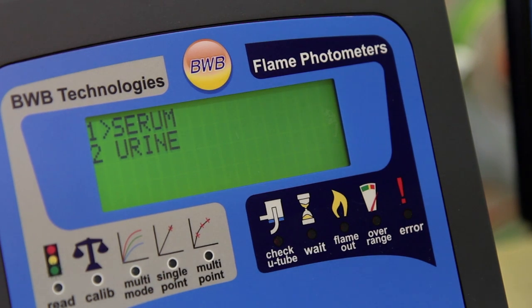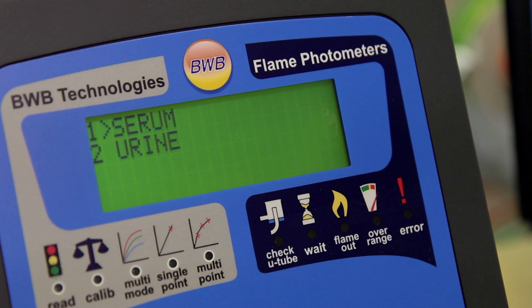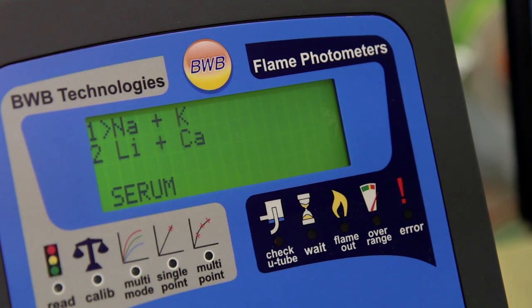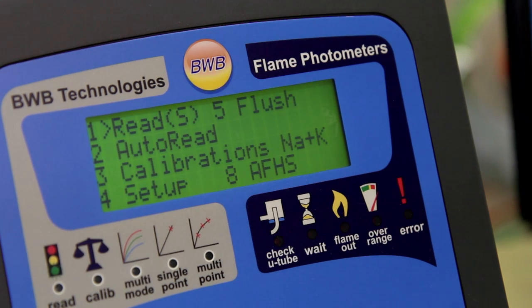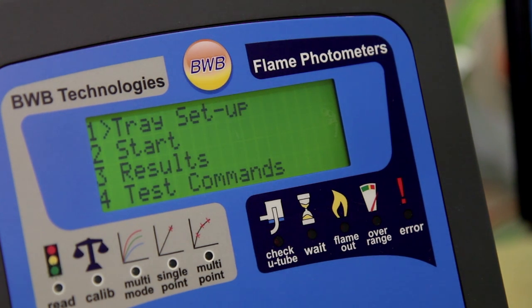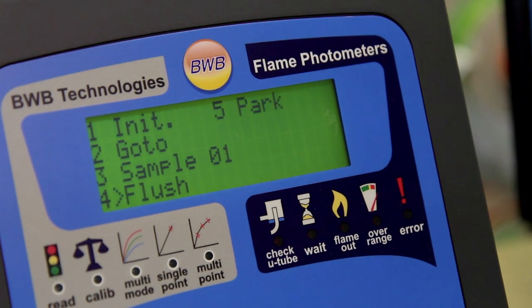Select serum or urine and your ions of interest. For the purposes of initialization, your selection is not critical and can be changed once initialization is complete. Select AFHS option 8. Select test commands option 4. Select initialization option 1.